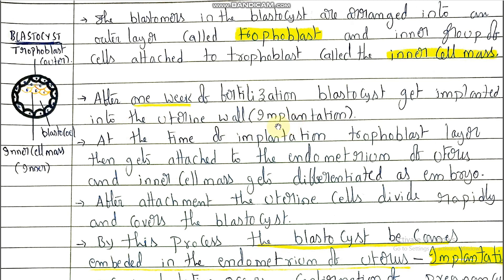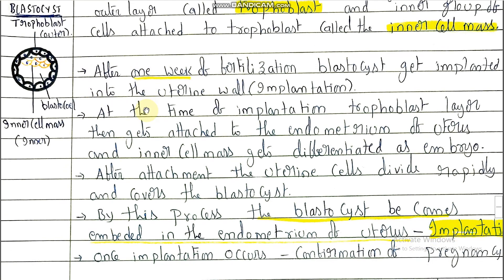Once the blastocyst is formed, it attaches to the endometrium wall of the uterus — that is implantation. This occurs after one week of fertilization. So the zygote develops as a blastocyst over one week, and after one week it gets implanted.